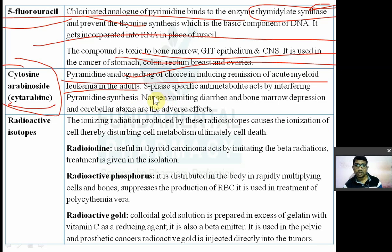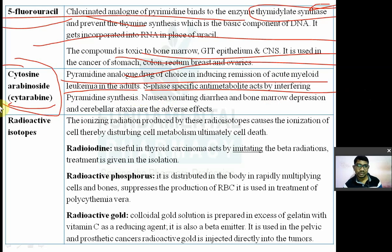Cytarabine is an S-phase specific anti-metabolite. It acts by intervening with pyrimidine synthesis because it is a pyrimidine analogue.